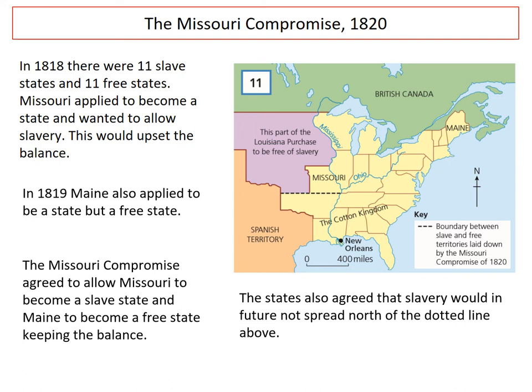So slavery was kept in the South and people of the North were kept free. This means that opposition didn't grow because they had agreed a compromise that stopped their anger and what was potentially going to cause conflict.